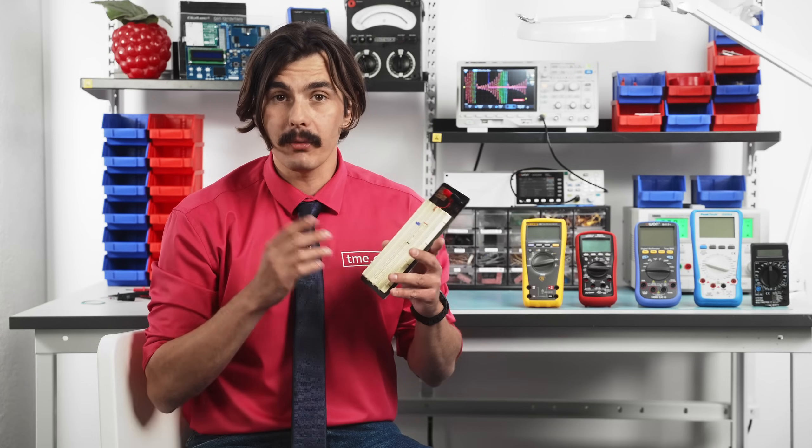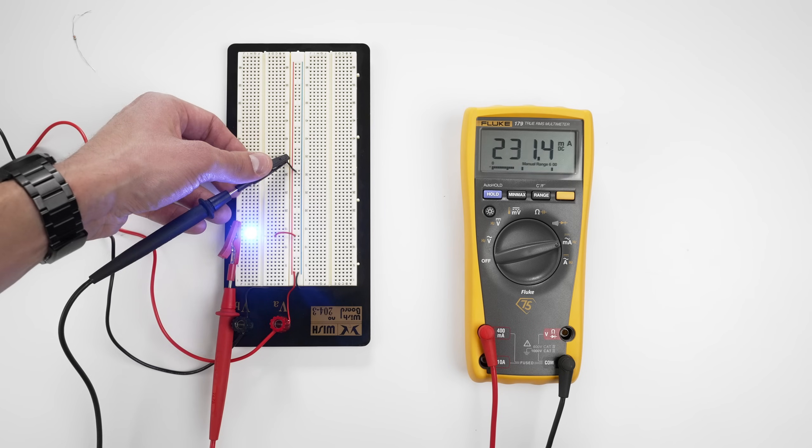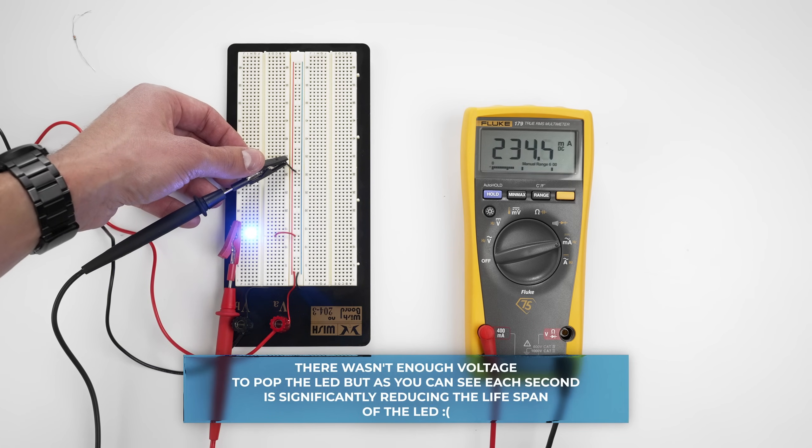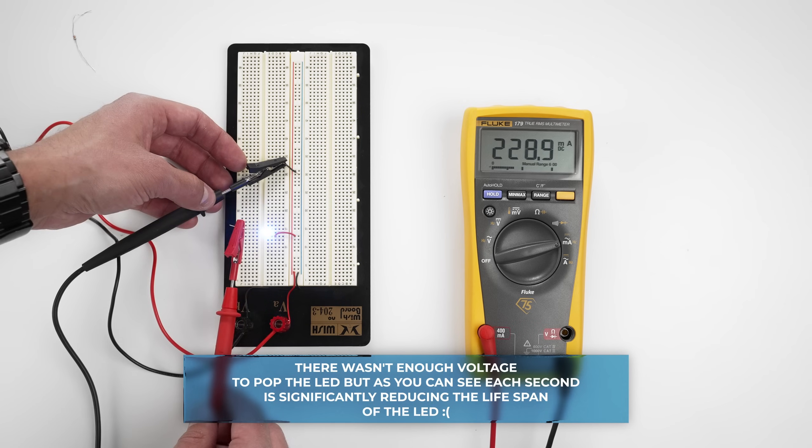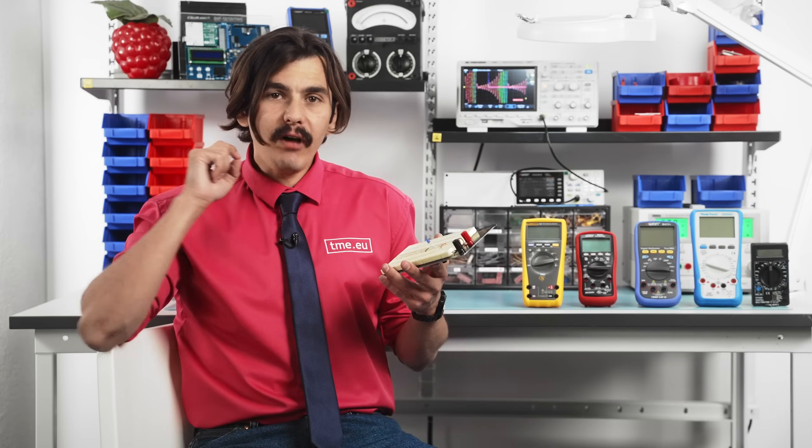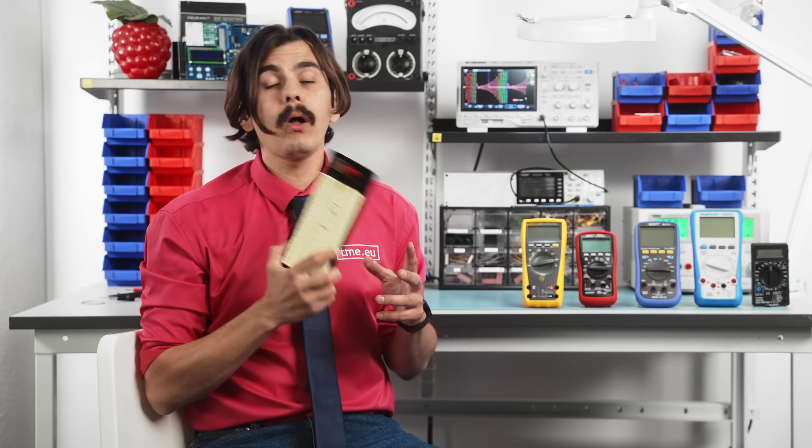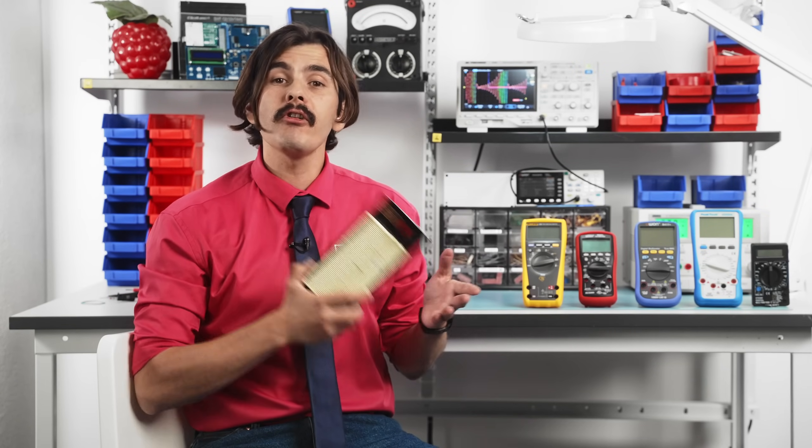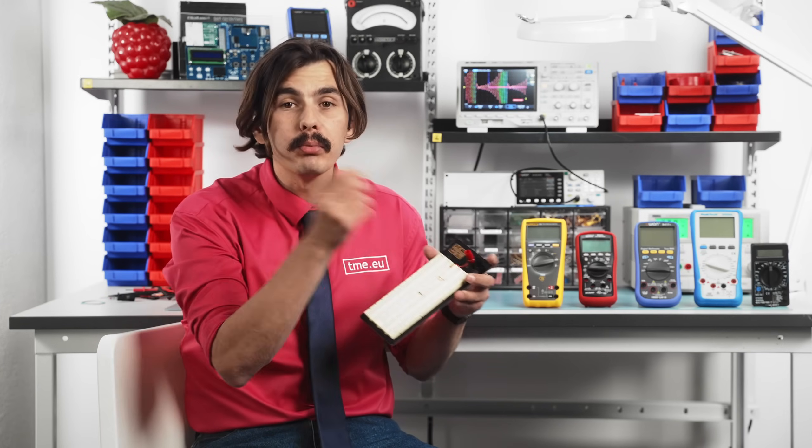But without the resistor, the remaining 2 volts are dropped directly across the LED. Assuming the internal resistance is around 10 ohms, the current could spike to 200 milliamps. This level is far beyond safe operation and will almost certainly destroy and kill and damage the LED. It's kaput.